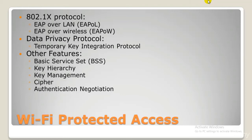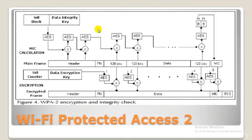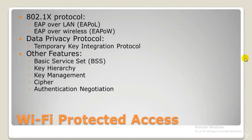Despite the significant improvement WPA offered over WEP, the ghost of WEP still haunted WPA. TKIP, a core component of WPA, was designed to be easily rolled out via firmware upgrades on existing WEP-enabled devices. As such, it had to recycle certain elements used in the WEP system, which were ultimately exploited again, becoming a backdoor for hackers. WPA, like its predecessor WEP, has been shown via both proof of concept and public demonstration to be vulnerable to intrusion. Interestingly, WPA is usually breached not by a direct attack on the WPA algorithm, but by attacks on Wi-Fi Protected Setup, WPS, which was designed to make it easy to link devices to modern access points.